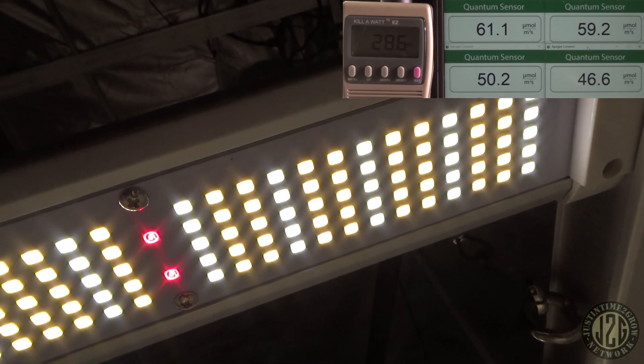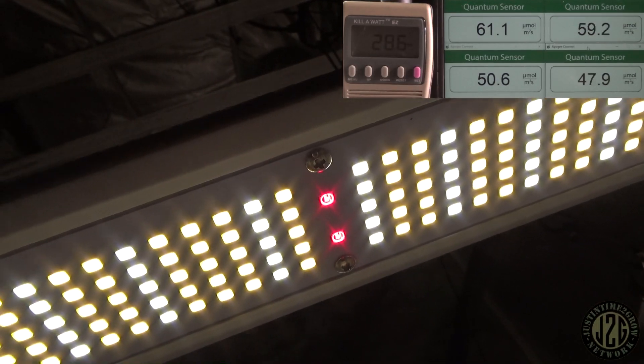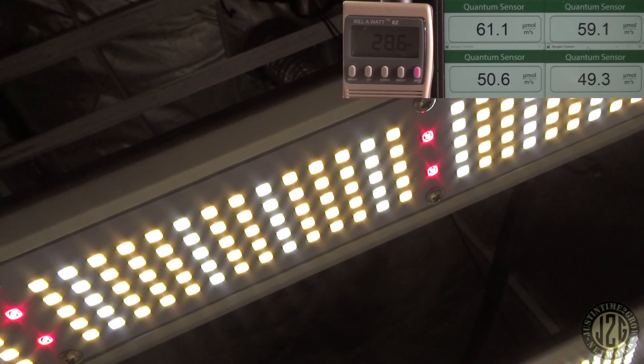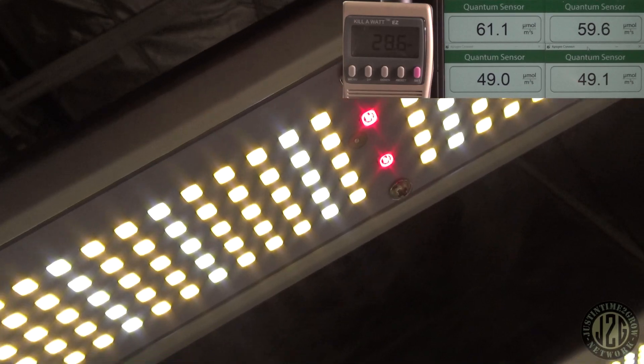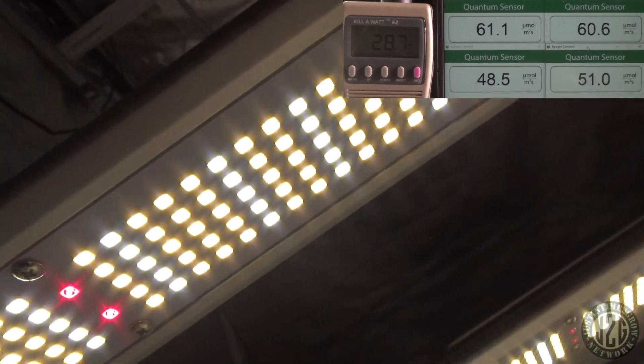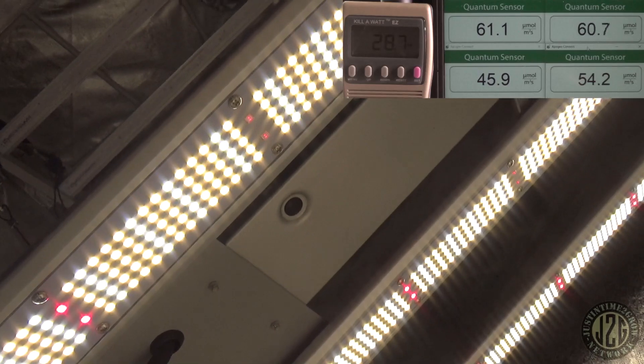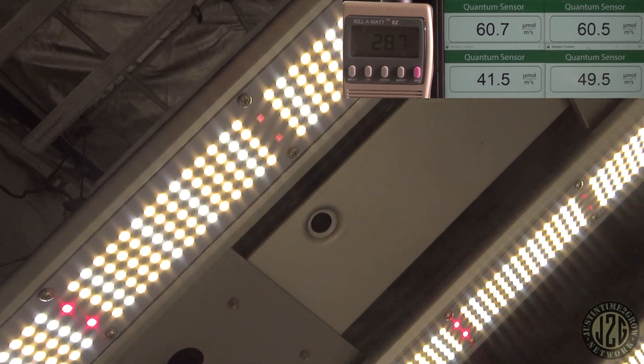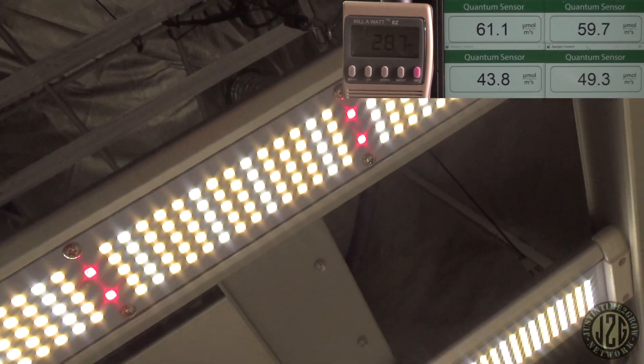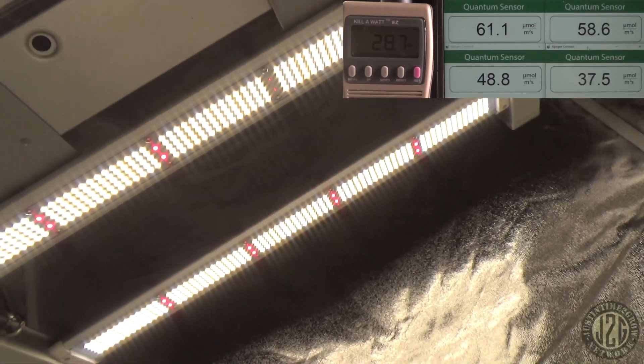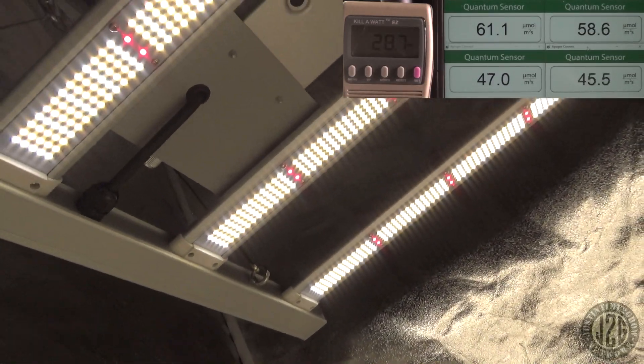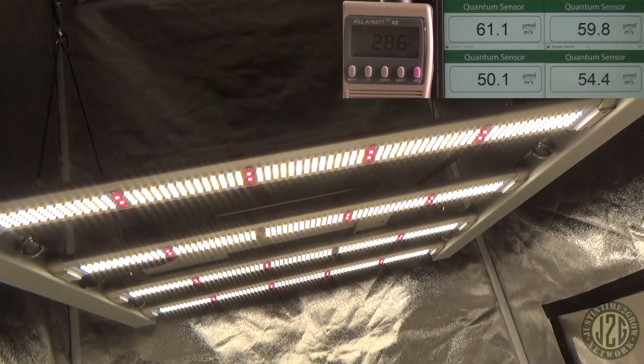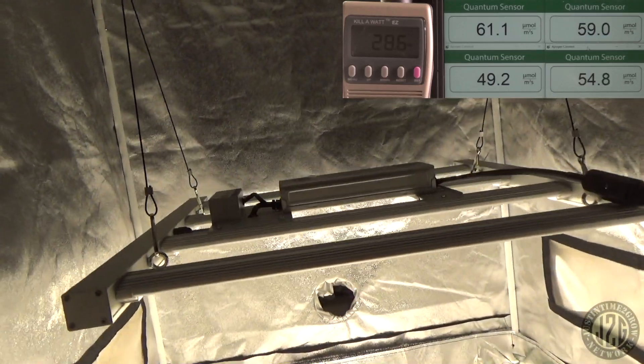It looks like we got basically like a two-to-one ratio cool white to warm white, or warm white to cool white I should say - more warm than cool. Then we got some reds sprinkled throughout. Looks like maybe some infrared right there. It does have some infrared, so it's got 660 reds, cool white, warm white, and infrared. Pretty nice load out.